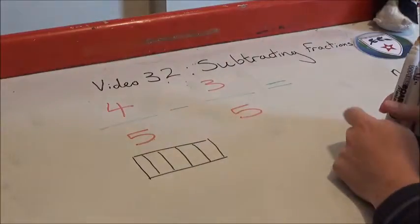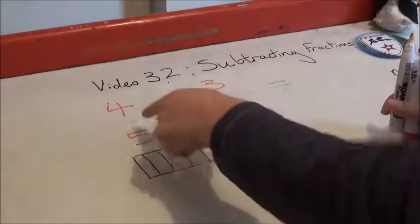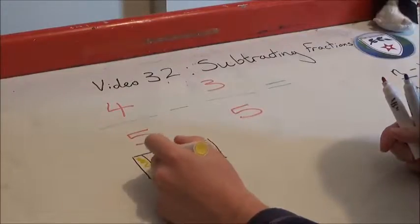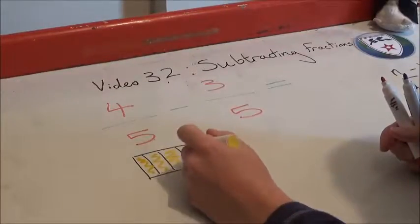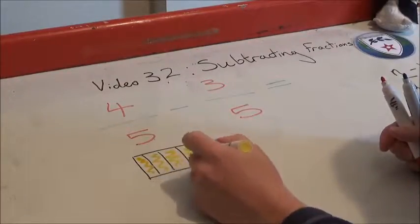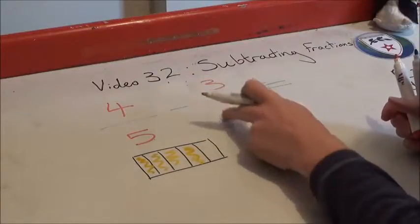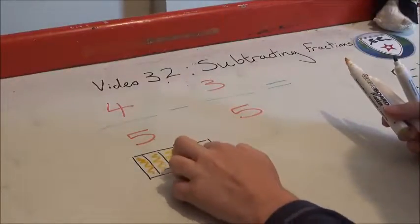So here we have four-fifths, and we're taking away three-fifths. Now, again, if we have a common denominator, this is very simple. Here's my four-fifths. Let me color my four-fifths in: one, two, three, four. My starting fraction.